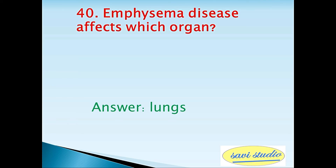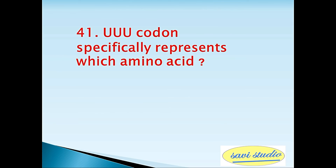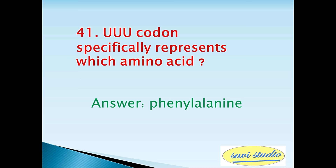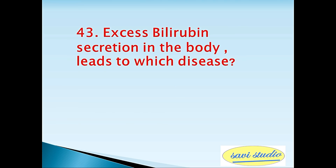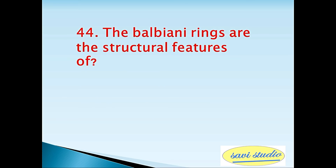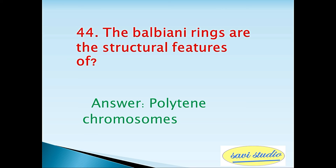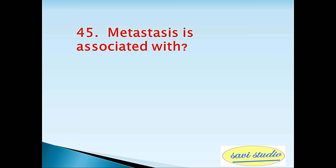Thirty-ninth question: What is the full form of CVA? Answer: cerebrovascular accident. Fortieth question: Emphysema disease affects which organ? Answer: lungs. Forty-first question: The UUU codon specifically represents which amino acid? Answer: phenylalanine. Forty-second question: How many pairs of cranial nerves are there in the human body? Answer: 12. Forty-third question: Excess bilirubin secretion in the body leads to which disease? Answer: jaundice.